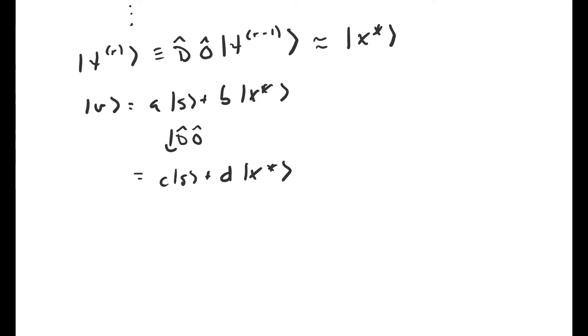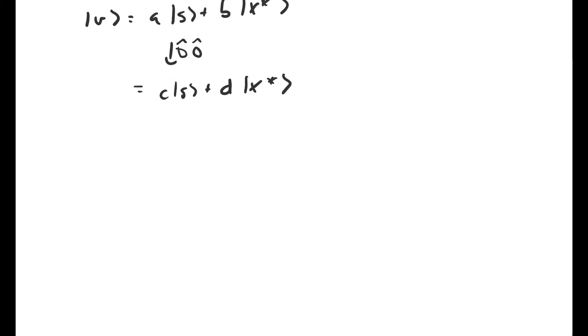s and x star form a basis of this subspace, but they're not orthogonal. The inner product of x star with s is one over root two to the n.